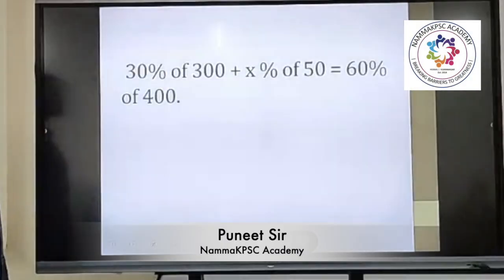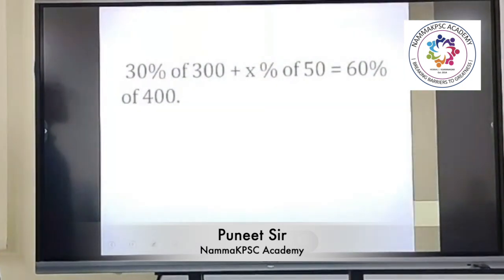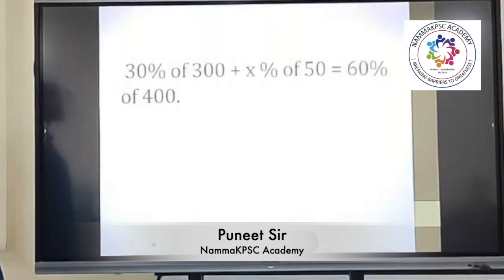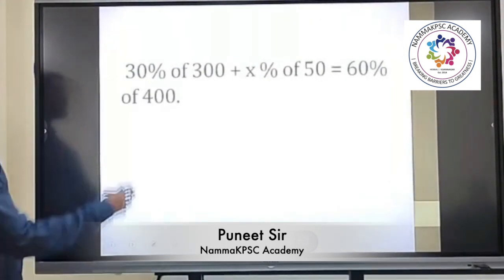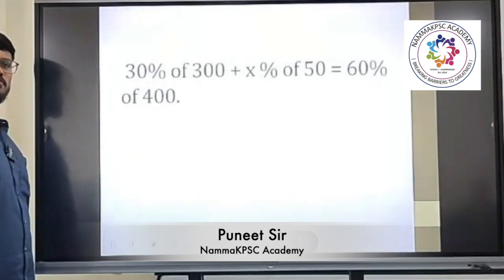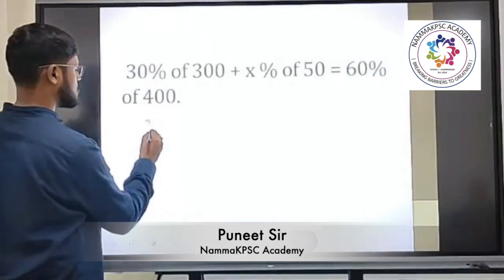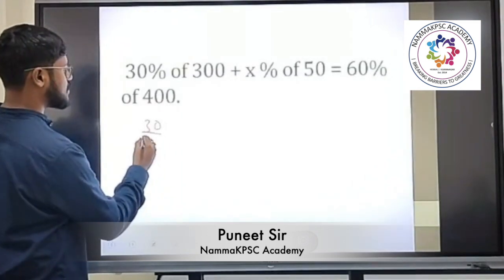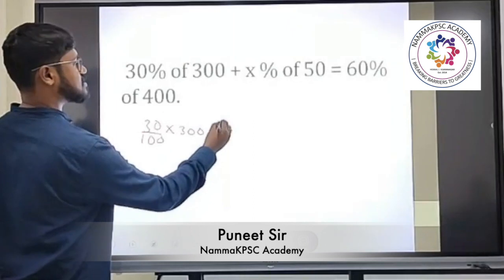So next one: 30% of 300 plus x% of 50 equals 60% of 400. Whenever percentage is there, what will you do? How do you make it into an equation? 30% of means 30 by 100. This equation will become what? 30 by 100 into 300, again x is there means...